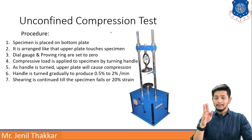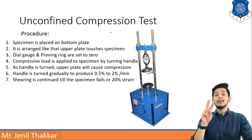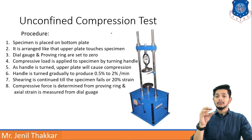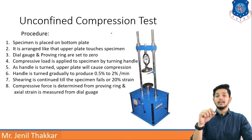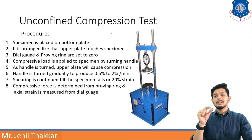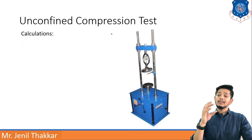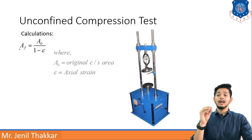As we have seen previously in the direct shear test, testing is carried out up to approximately 20 percent strain. The compressive force is determined from the proving ring and axial strain is measured from the dial gauge. The proving ring gives the amount of compression applied, and the dial gauge provides the displacement value from which you can calculate strain.